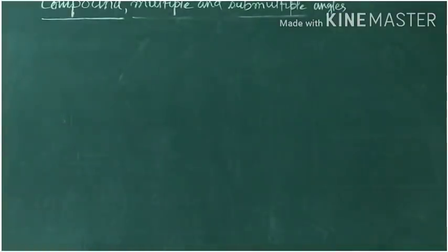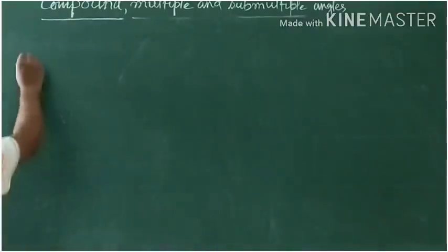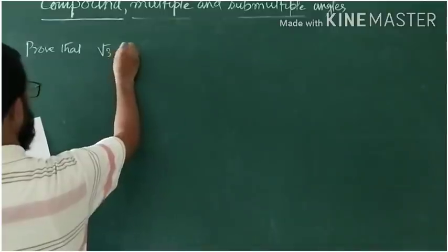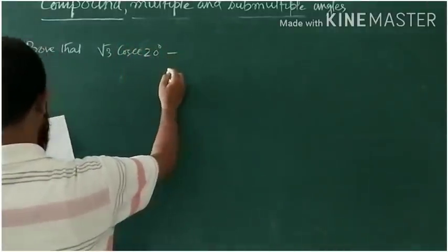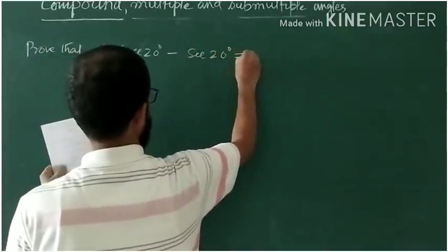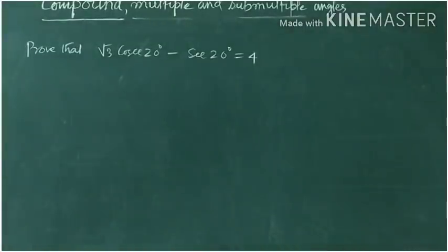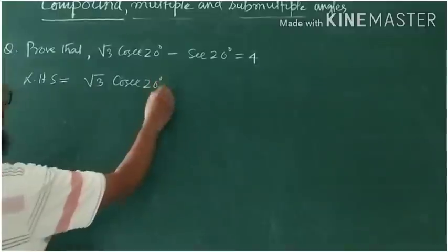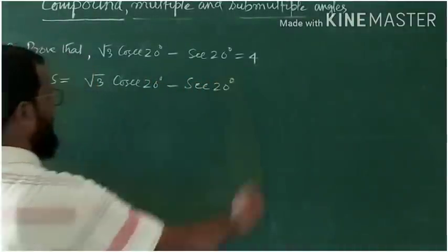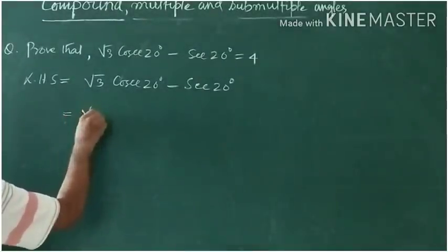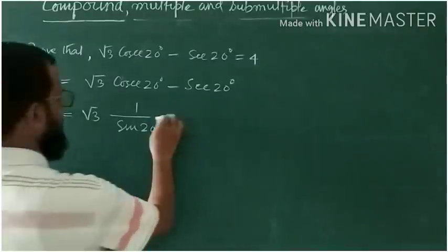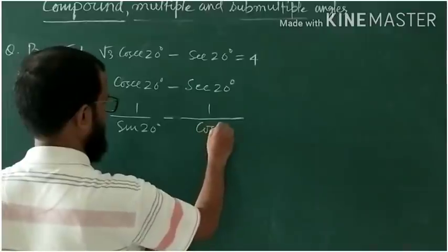So let us go on to solve another question — a very nice question. You are going to prove that √3·cosec(20°) − sec(20°) = 4.